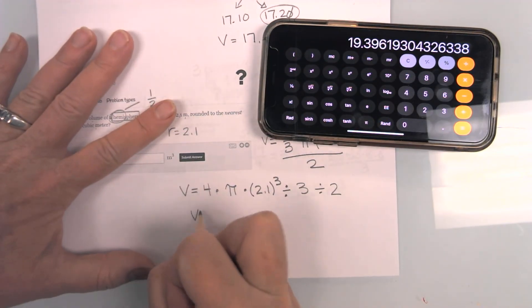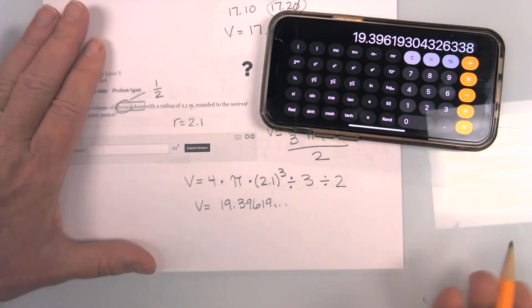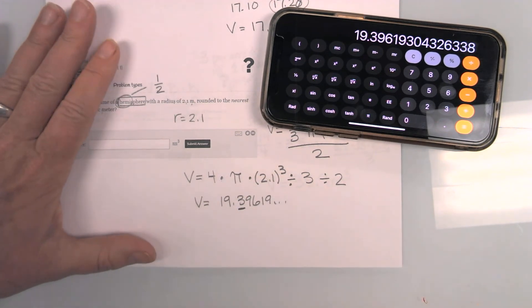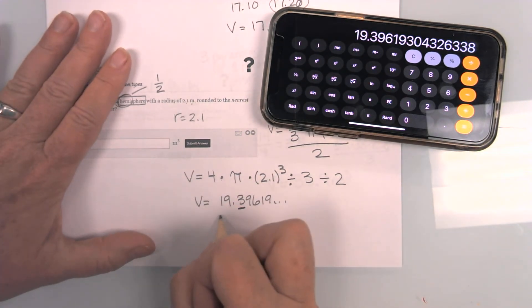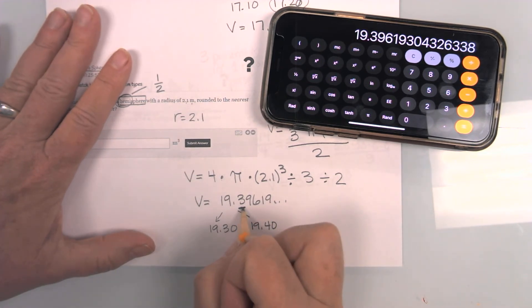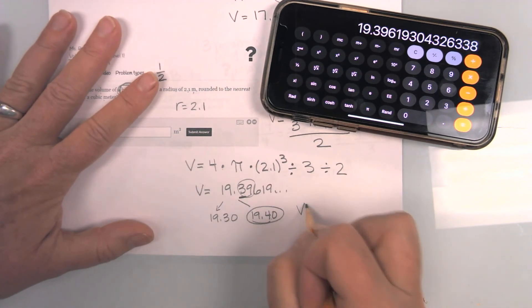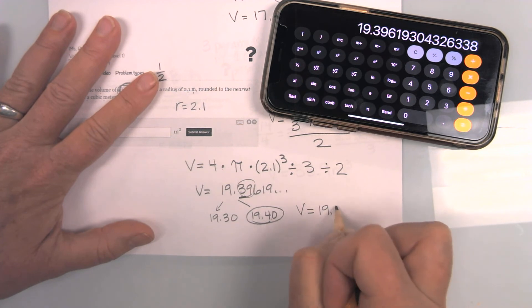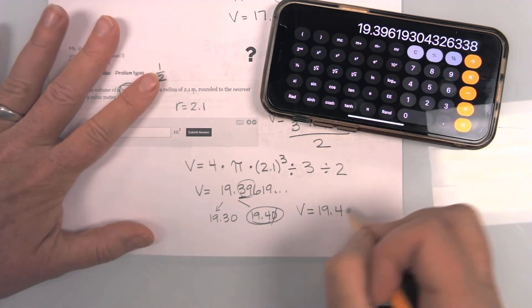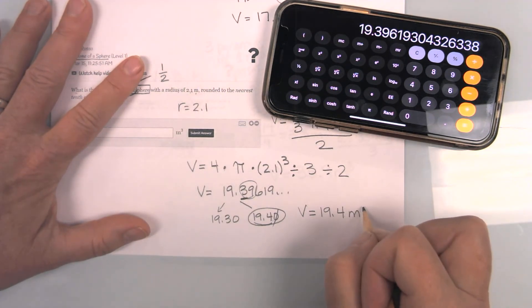I have volume equals 19.39619, and it keeps going. I need to round to the tenths, so this is either going to be 19.30 or it's going to be 19.40. Since this is a 39, it is closer here. My volume is 19.4. Don't need to write the zero. So what was my unit? It was meters, and because this is a 3D shape, it is cubed. I'm going to type that in and check my work.